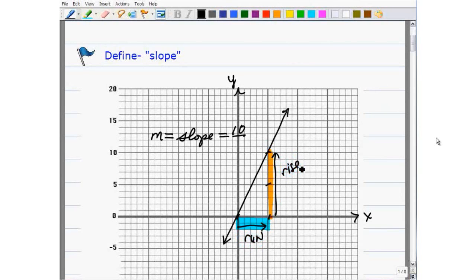So for every 10 it rises, it's running 5. So the slope is 2. And that's it. So basically the slope, let's wrap this up, is nothing but a number.